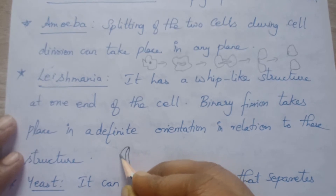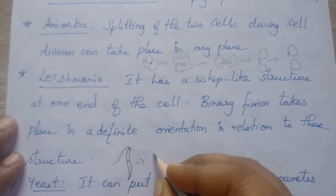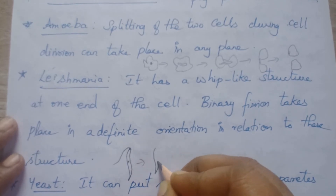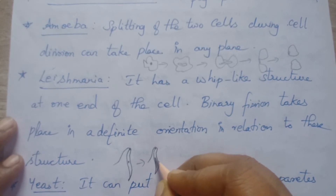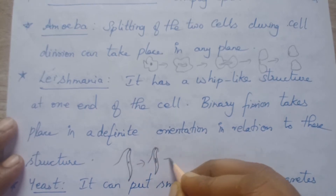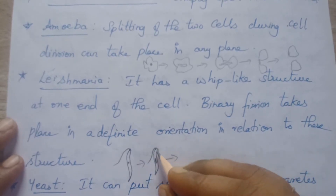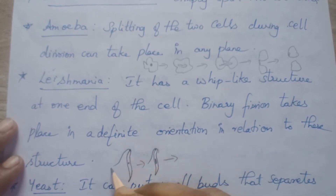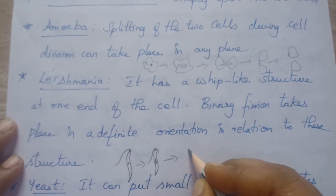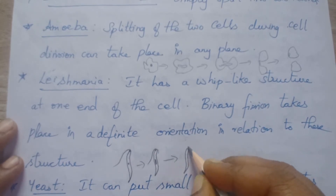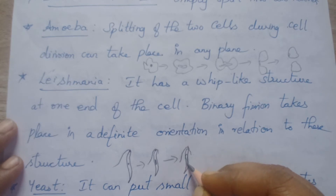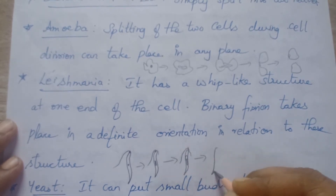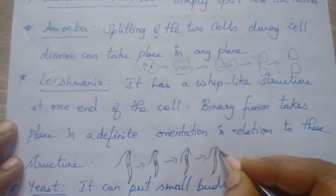Leishmania has a whip-like structure at one end and a nucleus. The whip-like structure will be there, and the nucleus tries to expand. First it copies the nucleus, and a new small whip-like structure will be formed. It splits only at a definite orientation because it has one whip-like structure. The whip starts growing and the nucleus elongates.